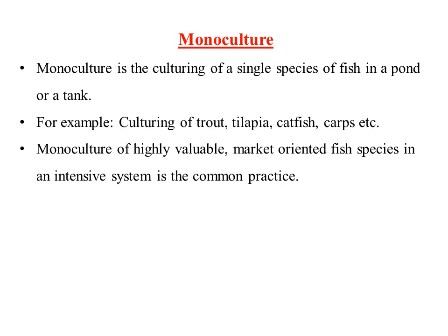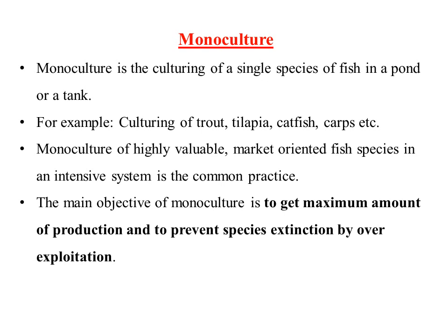Mainly highly valuable and market-oriented fish species are cultured in the monoculture system through intensive care. The main objectives of monoculture are to get a maximum amount of production and to prevent species from extinction through over-exploitation. Fish farming in a monoculture system is not much dependent on natural food sources, so well-balanced or supplementary feeds are applied to culture highly marketable species.